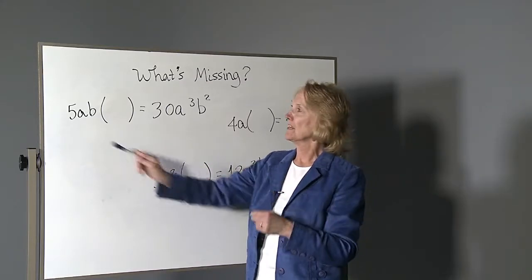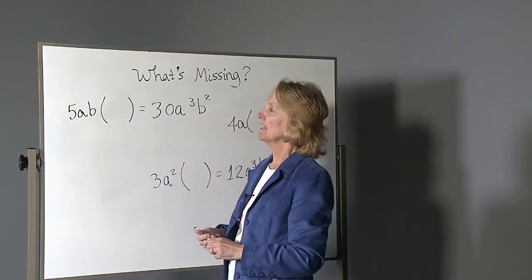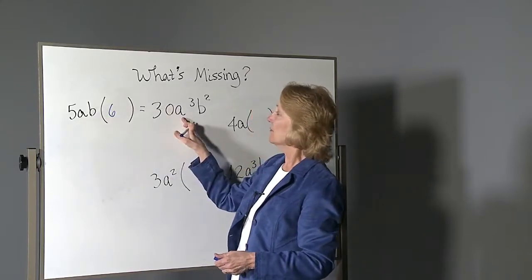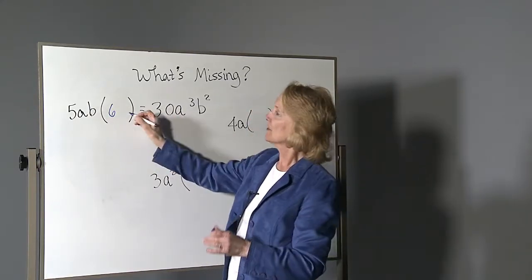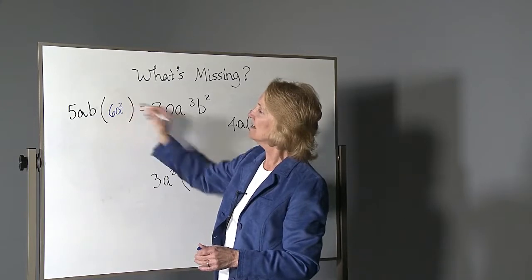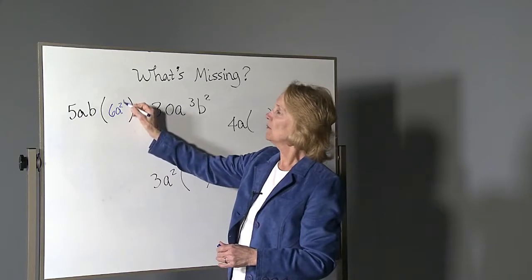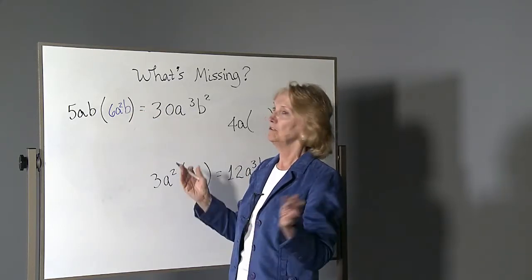First, we just do the numbers. Five times what makes 30? Five times six. This has an a. We need a to the third, so this factor has to have a to the second. We have a b. We need b to the second, so we need one more b. Done.